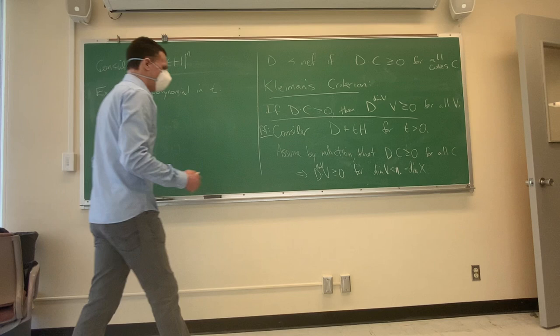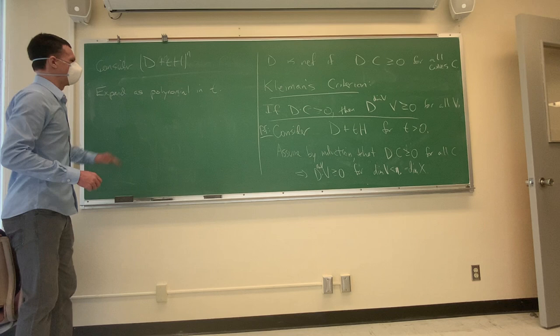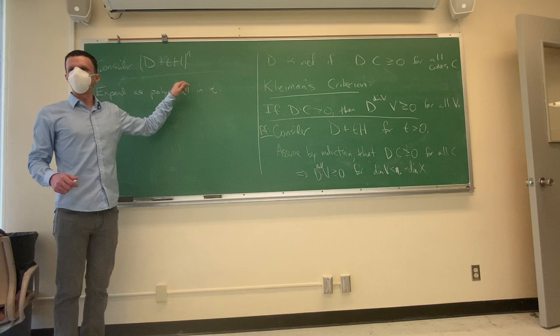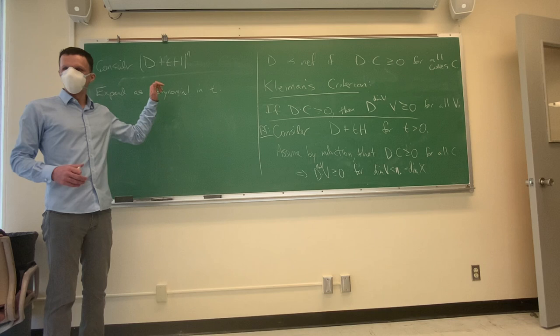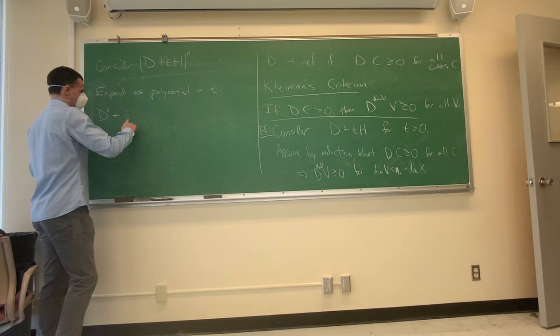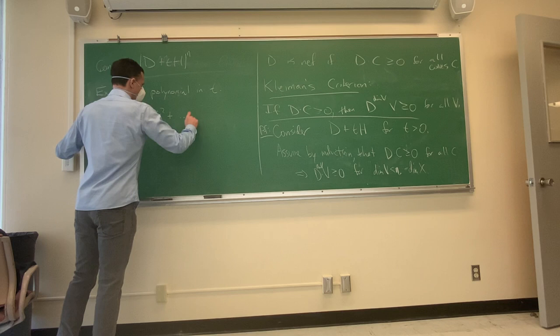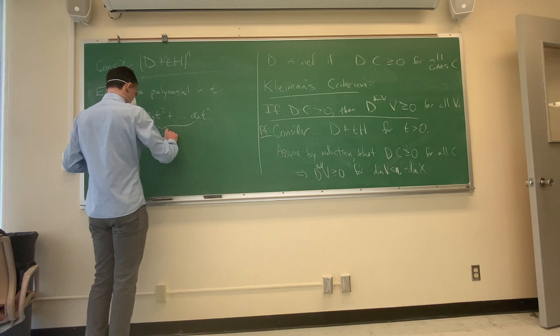We look at self-intersection numbers on various subvarieties. We consider D plus tH to the n. If you squint at it, this is actually a polynomial in t, so you can expand it as a polynomial in t. If t is large, the ample term is going to dominate. You get D to the n plus terms in t — all intersection numbers of D and H. H is an ample divisor, so when you intersect it with itself you get actual subvarieties, and restricting D to those gives something non-negative. So we get D to the n as the constant term, plus a₁t plus a₂t² up through aₙtⁿ, where all these terms have non-negative coefficients, and the leading term H to the n is certainly positive.